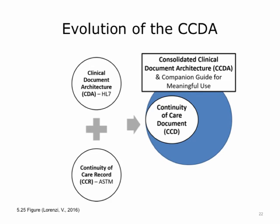Another implementation guide provided additional constraints called HITSP C32. Additional implementation guides on top of CDA were also created, such as for discharge summaries, progress notes, and operative reports. Finally, a group of people got together and decided that all of these different implementation guides represented a patient's health story and needed to be consolidated into a single implementation guide called the Consolidated CDA. Meaningful Use Stage 2 and Stage 3 both use CCDA to support patient engagement and care coordination. The CCDA companion guide provides guidance on how to use CCDA for these purposes. The most important part of the CCDA for care transition and patient engagement is the CCD.